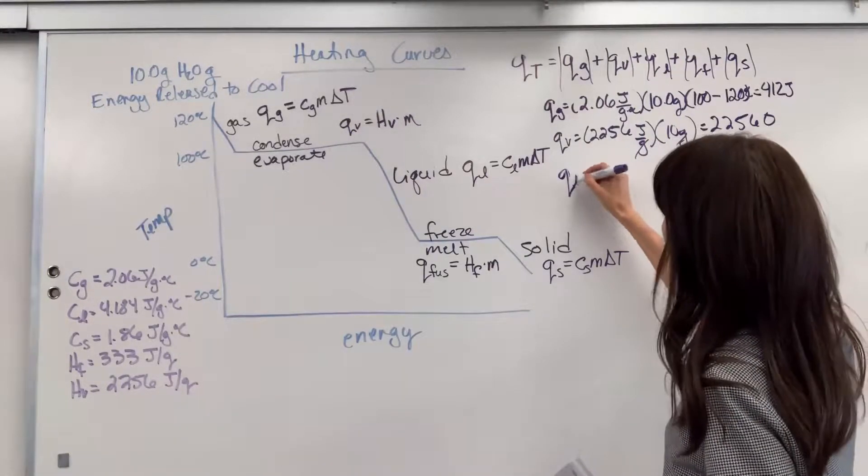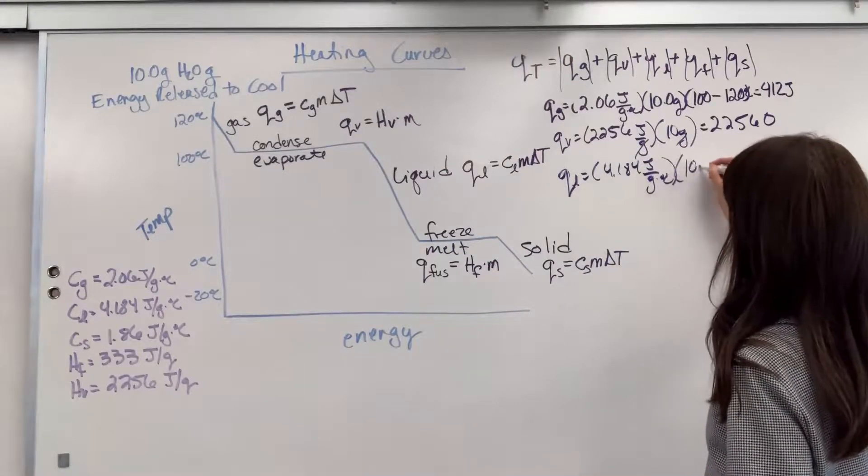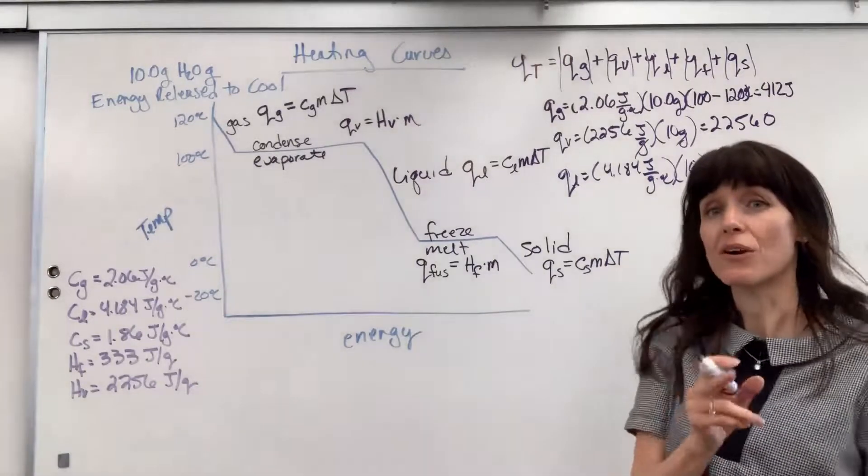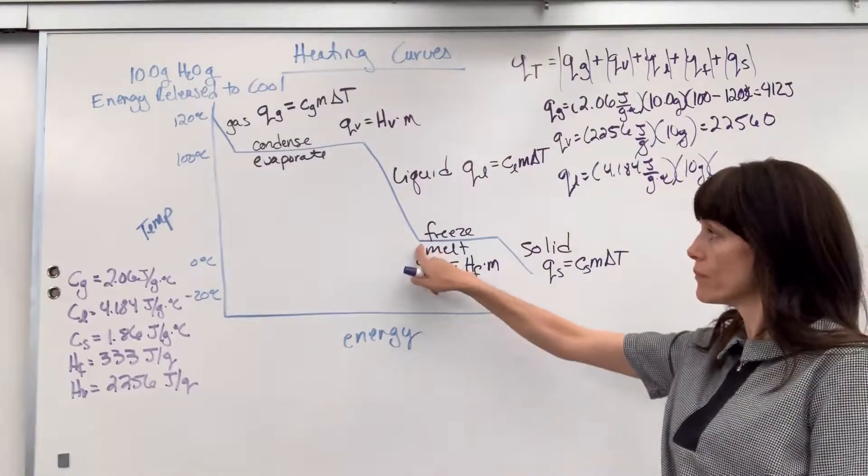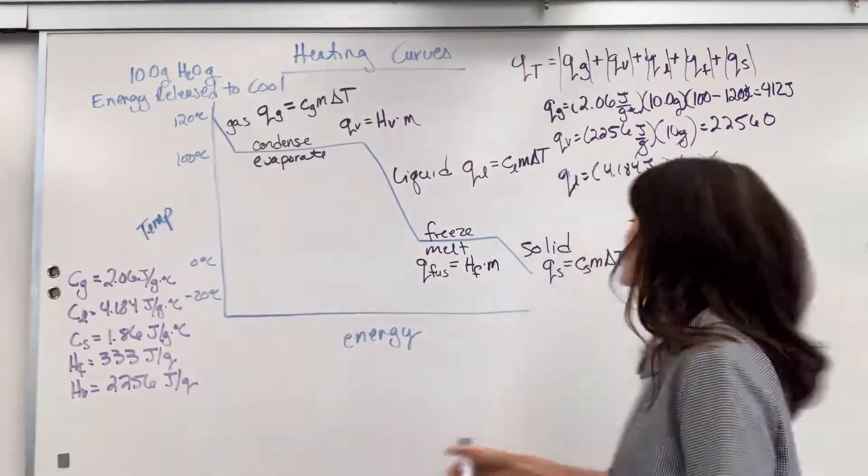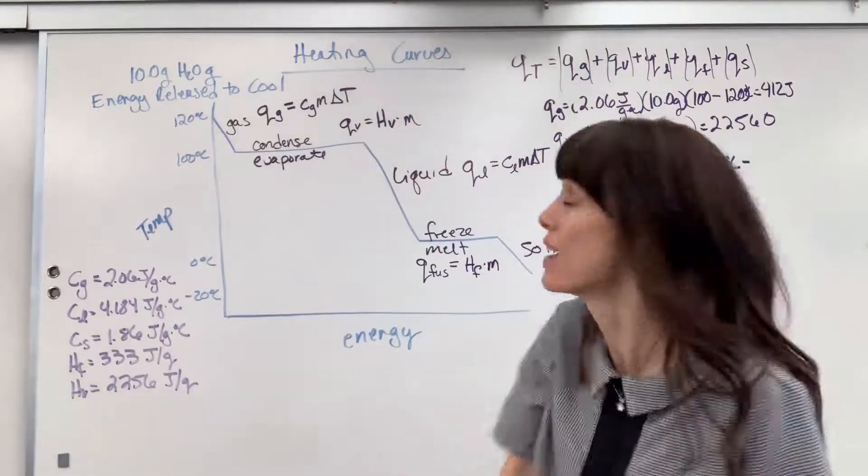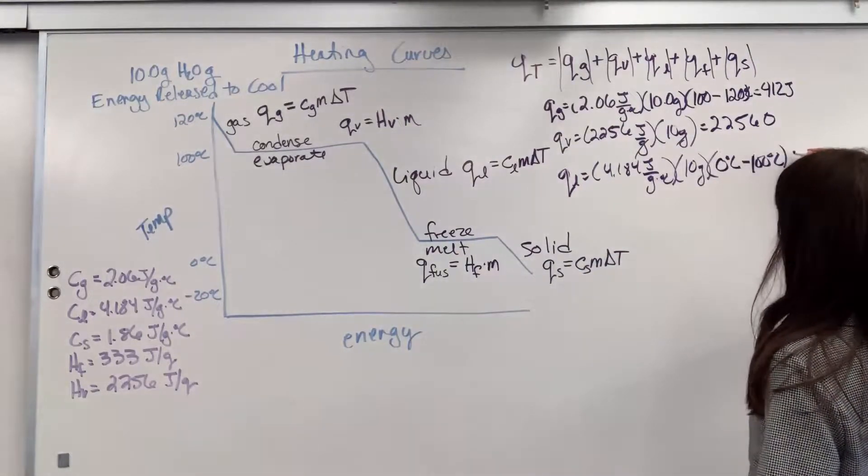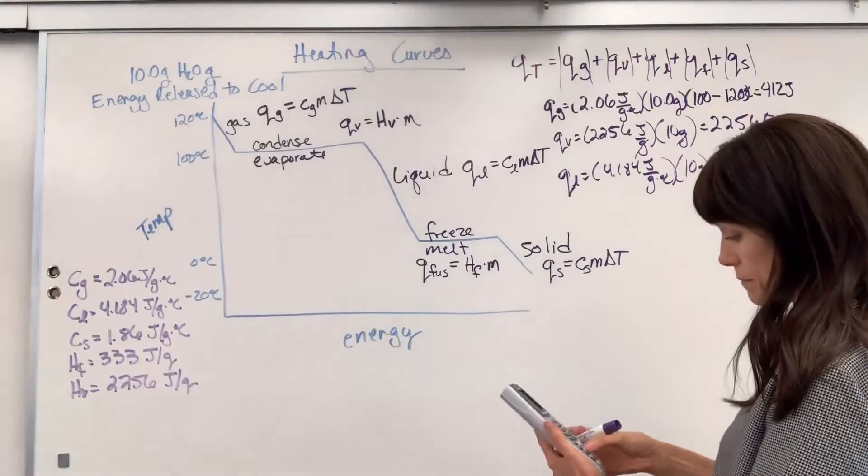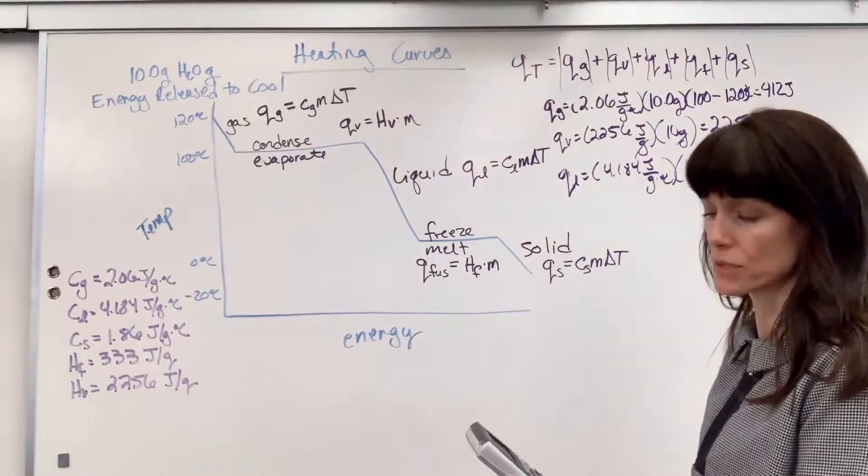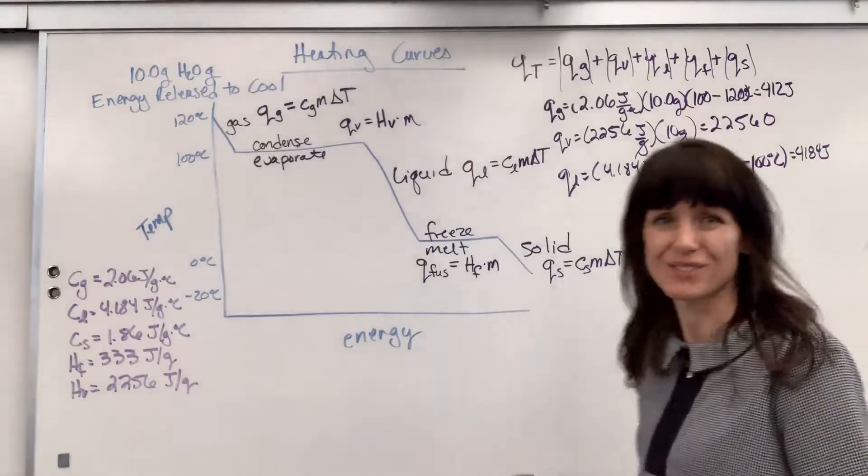Let's do Q of liquid. 4.184 joules per gram degrees C times mass, 10 grams. Again, be careful on the temperature. Final temperature for liquid, right there. The liquid ends at the zero degrees. So, final temperature is zero degrees minus the temperature of the liquid, 100 degrees. That gives us 4,184 joules.